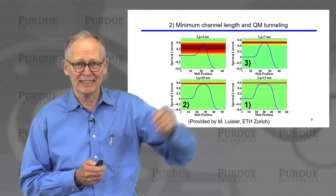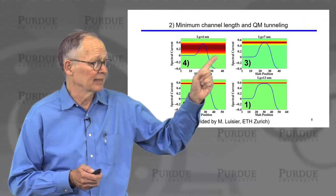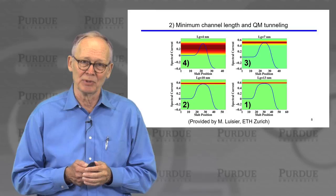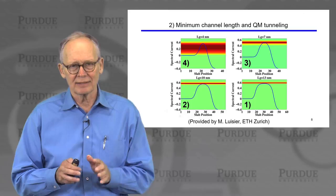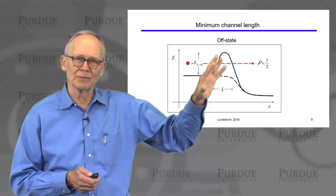If we make the channel length even shorter — seven nanometers — there is now a significant amount of tunneling underneath the barrier. And if we go all the way to four nanometers, the electrons just tunnel through the barrier even though the device is supposed to be off. The barrier has become transparent to the electrons because of a high probability of quantum mechanical tunneling. So fundamentally, direct tunneling through this energy barrier is what sets the limit for how short we can make the channel length.